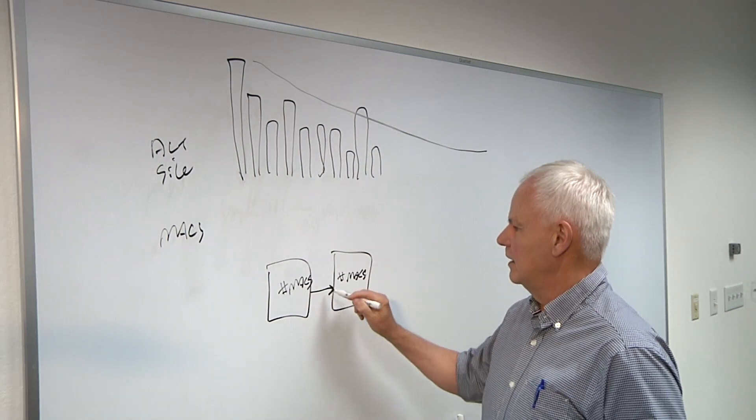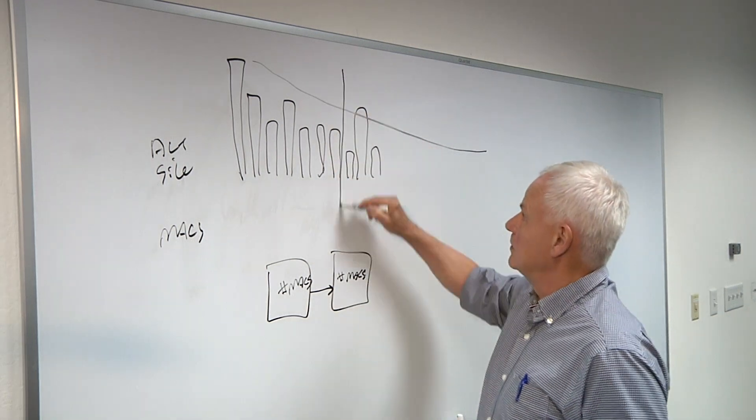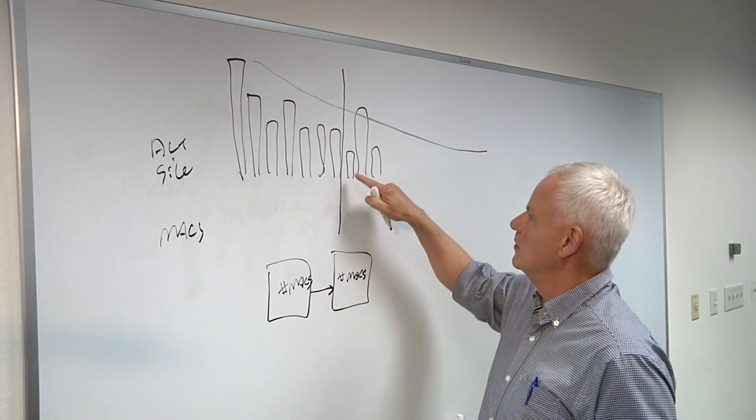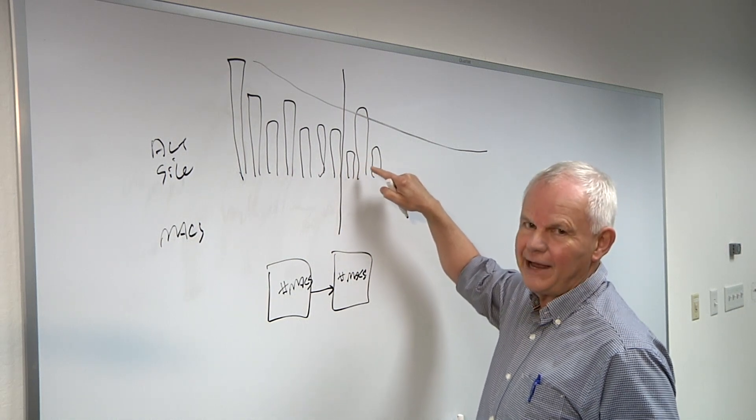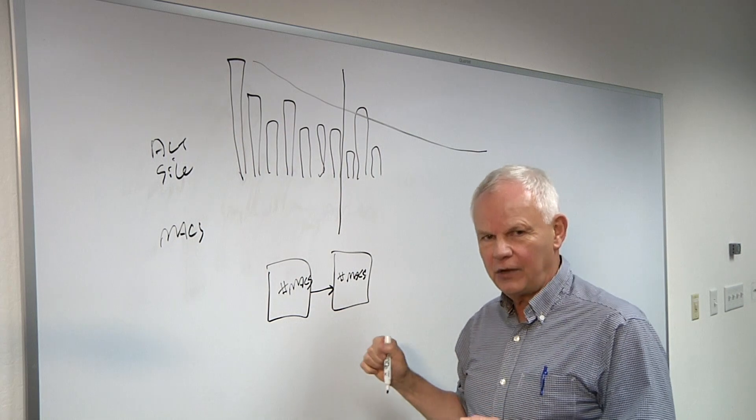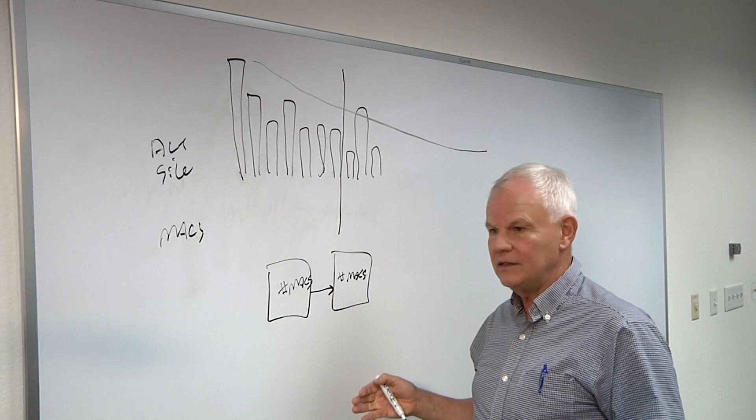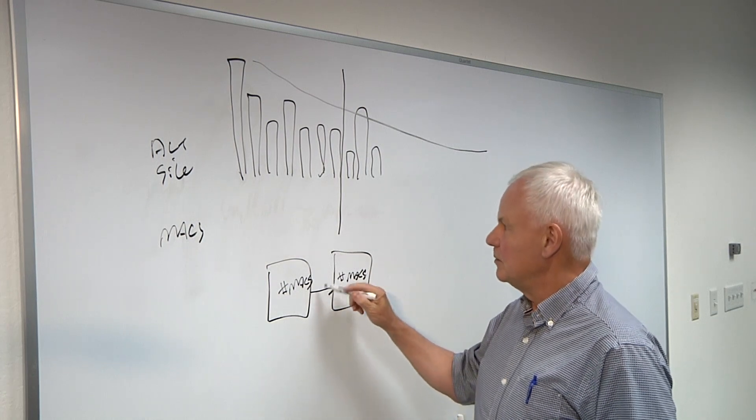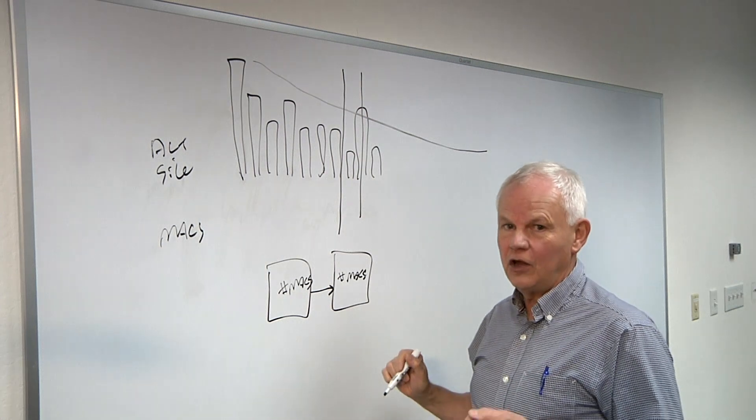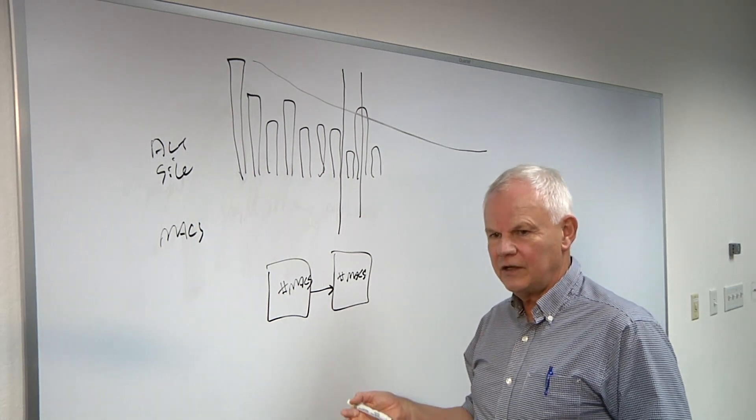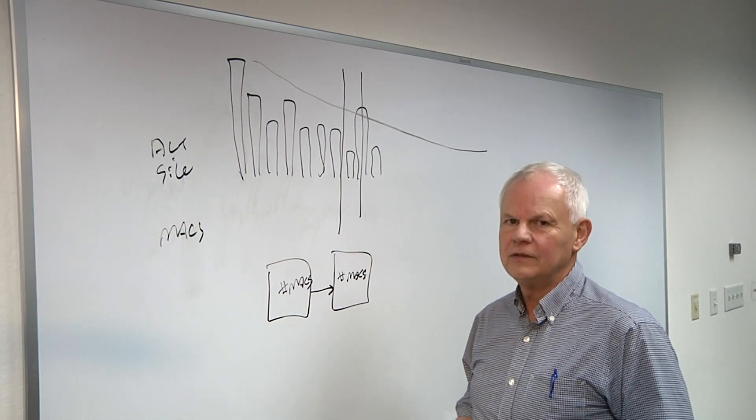But then you have to look at what gets passed between the chips. So at some point you want to slice the model and what you want to look for is a place to slice the model where the activation that you pass is as small as possible. So that the amount of communications bandwidth you require and the latency of the transmission is minimal. If you slice the model at a point where the activation is very large, the transmission of the activation can become the bottleneck which limits the performance of the two-chip solution.